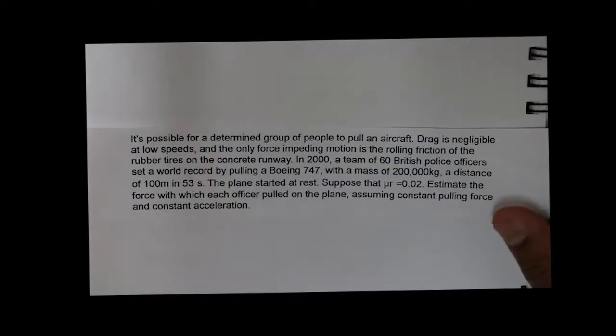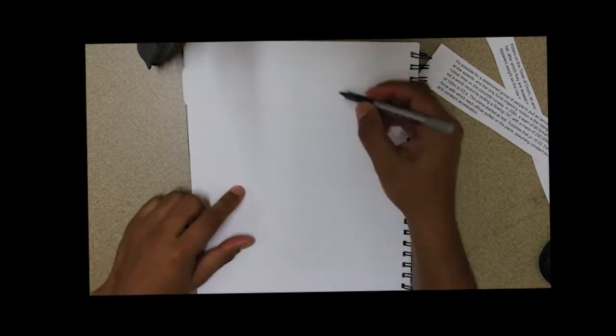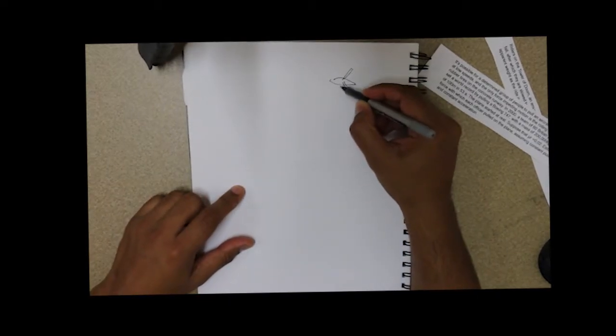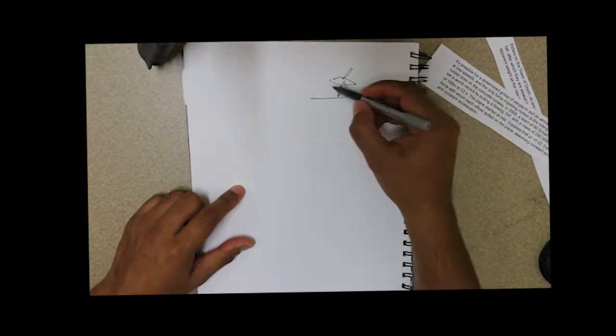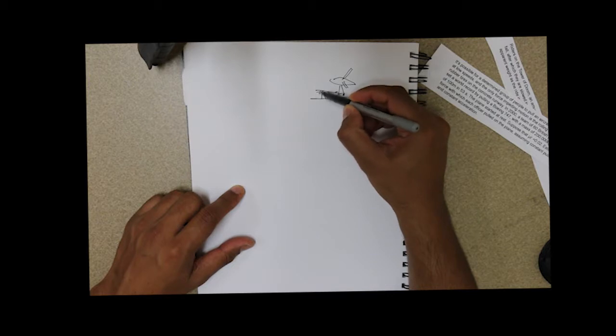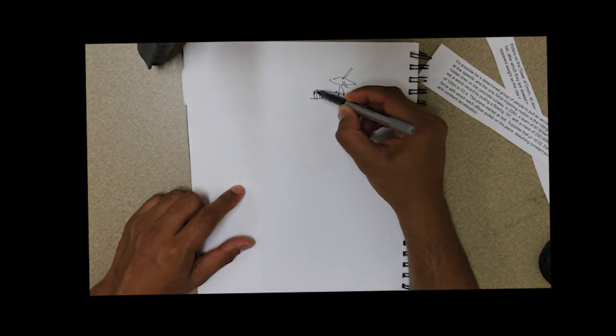Okay. So, what we have here is essentially a plane. Let's draw my plane on the runway, being pulled by 60 police officers.